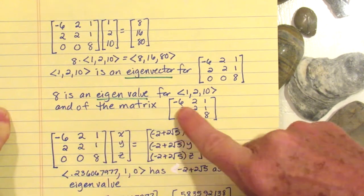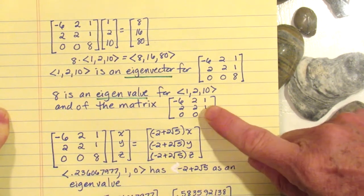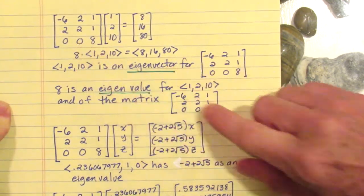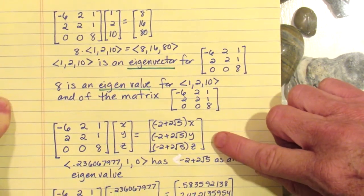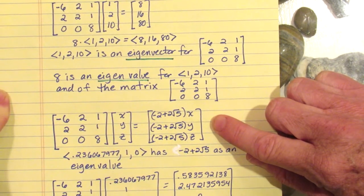We also will say that 8 is an eigenvalue of the three by three matrix. Notice that this three by three matrix has other eigenvalues; they're just not nice and clean like 8, so eigenvalues don't have to be nice clean numbers.